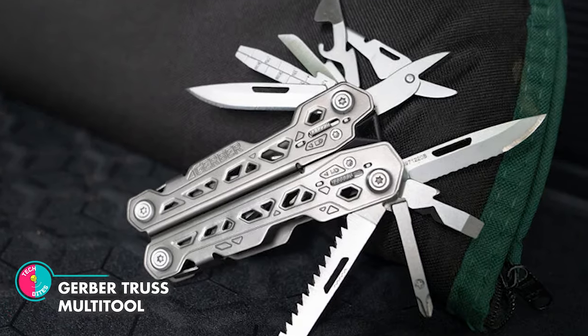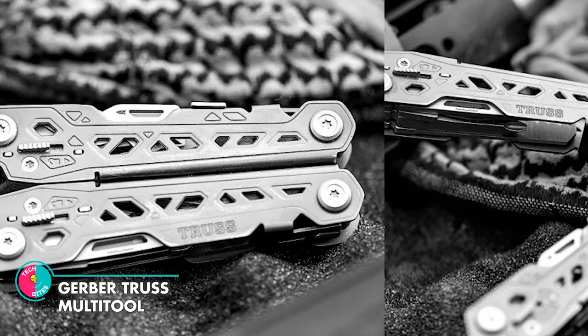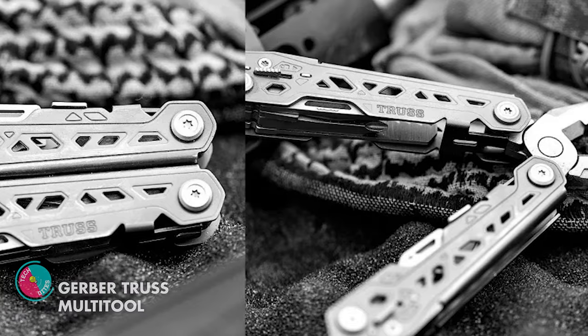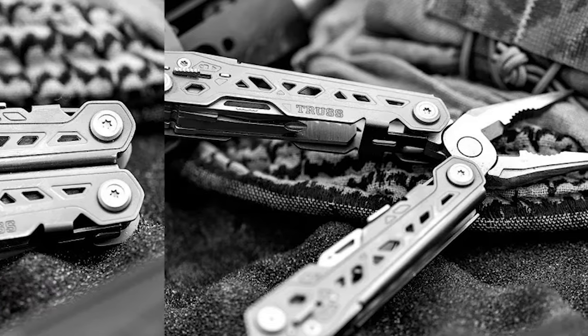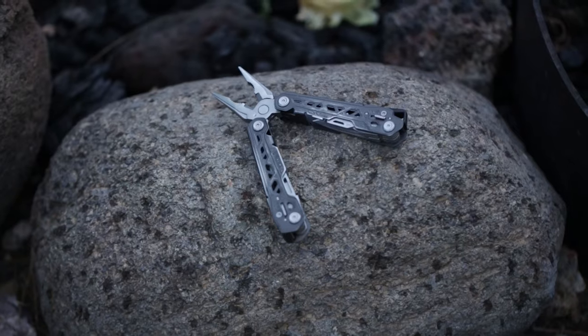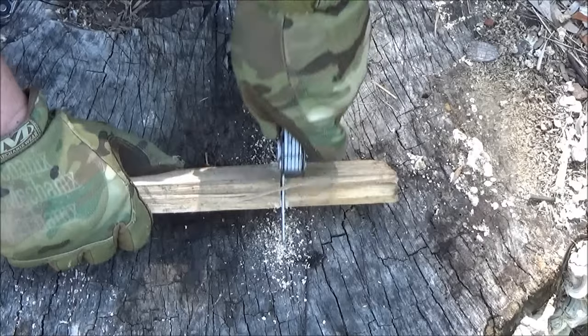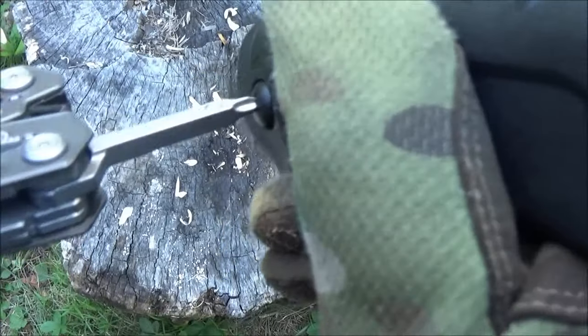Gerber Truss Multi-Tool. Gerber's professional-grade pocket knives, tools, and equipment are the ideal companion for any adventurer or handyman. It's an all-inclusive multi-tool with 17 tools in a compact form. The Truss has a bottle opener, a folding knife, a screwdriver, spring-loaded pliers, and other tools to handle jobs for regular craftsmen.